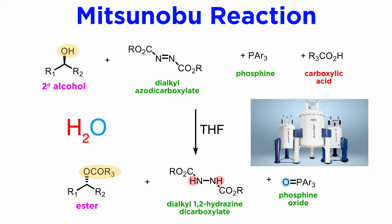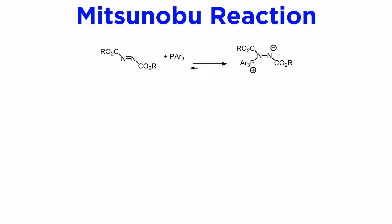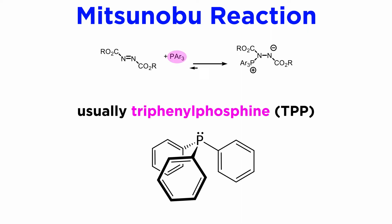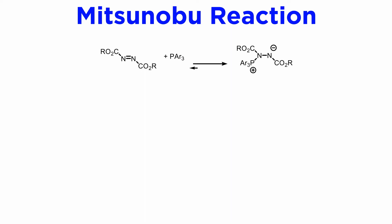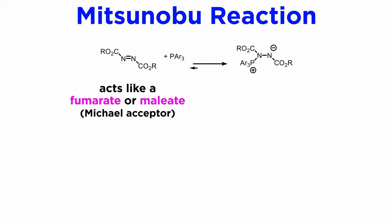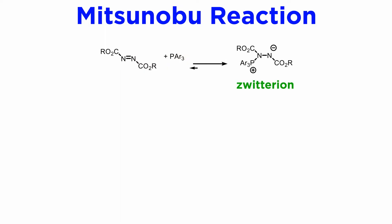If one monitors this reaction by NMR, one sees several species appearing and disappearing over time. Some intermediates are formed reversibly, but because they do not lead to product, we can simplify the mechanism as follows. In the first step, the phosphine — almost always triphenylphosphine, or TPP — adds to the azo compound. If you mentally replace the nitrogen atoms with carbon atoms, this molecule looks like a fumarate or a maleate, therefore a Michael acceptor, and TPP is a good Michael nucleophile. So TPP does a conjugate addition very quickly, and a zwitterion is formed. The equilibrium lies all the way to the right under most conditions, giving stoichiometric formation of a zwitterion which will activate the alcohol toward substitution.